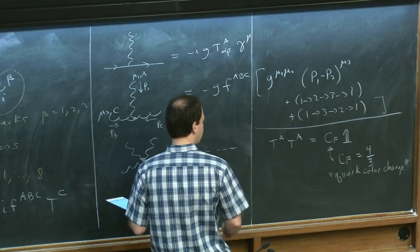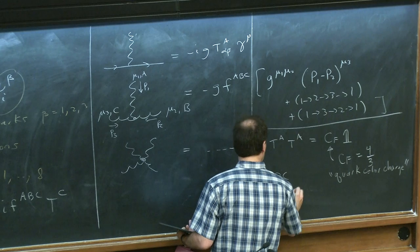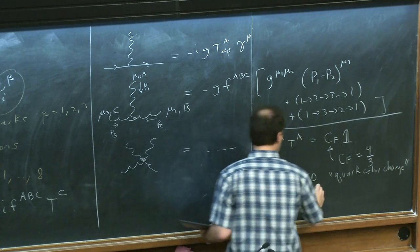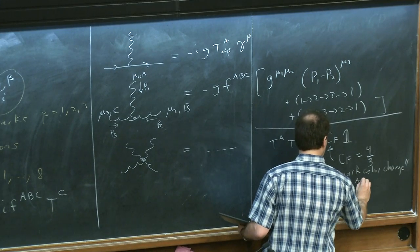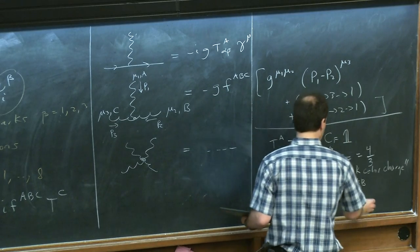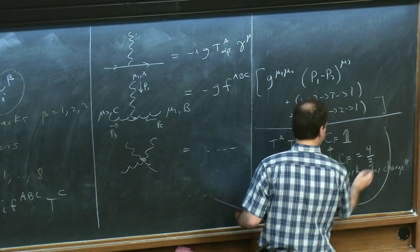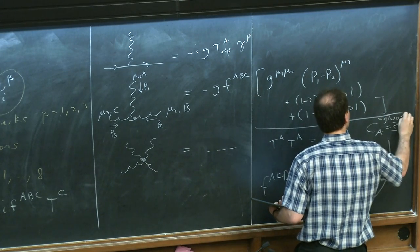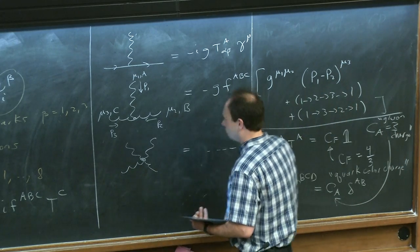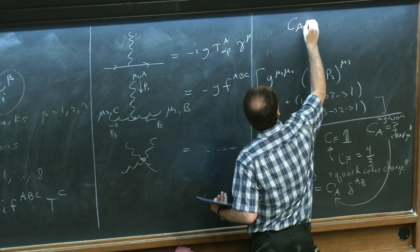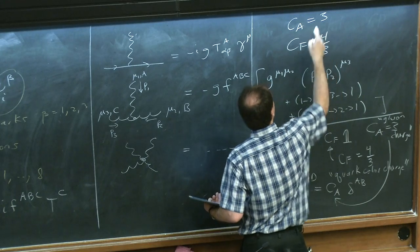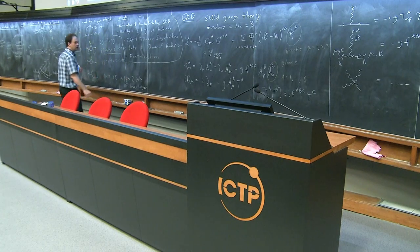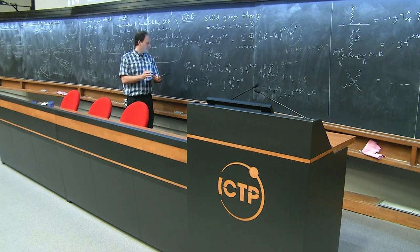If I have gluons interacting, I get products of the structure constants F. If I take two F's and contract them, I get the adjoint Casimir C_A times a delta_AB identity, where C_A = 3. That's the gluon color charge. So we have C_A = 3 and C_F = 4/3. There's roughly a factor of two between them — gluons are coupling roughly twice as strongly as quarks. That's the key physical notion to take away.